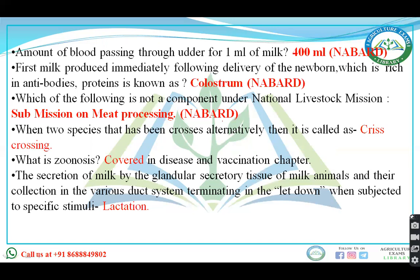They gave 4–5 schemes in options and asked which is not a component of the National Livestock Mission — the answer was Sub-mission on Meat Processing. They asked: when two species are crossed alternately, that is known as criss-crossing. They also asked about Johne's disease, which will be studied in the disease section. The definition of lactation — secretion of milk by glandular secretory tissue and its collection in duct systems, terminating in let-down when subjected to specific stimuli — was asked exactly as stated.